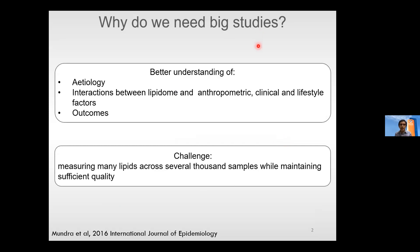The first question is: why do we need these big studies? The answer is that in many cases we need to analyze many samples to have a better understanding of the etiology of the disease we are studying, to clarify the interactions between the lipidome and other variables like anthropometric, clinical, and lifestyle factors, and to clarify the association of lipids with clinical outcomes. The main challenge is measuring many lipids across hundreds of thousands of samples while maintaining sufficient quality.